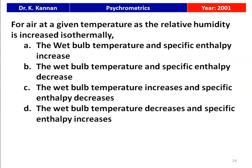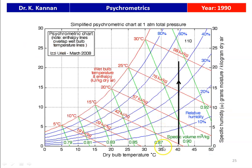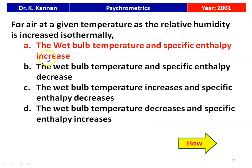The next question is from the 2001 question paper. For air at a given temperature, as relative humidity is increased isothermally, which is true: wet bulb temperature and specific enthalpy increase; wet bulb temperature increases but specific enthalpy decreases; wet bulb temperature decreases and specific enthalpy increases? The answer is wet bulb temperature and specific enthalpy increase. From the psychrometric chart, at constant temperature with increasing relative humidity, both wet bulb temperature and specific enthalpy increase.